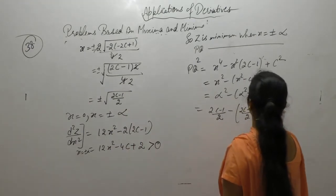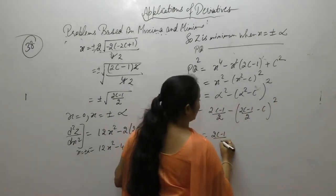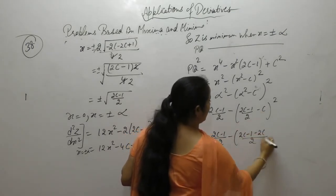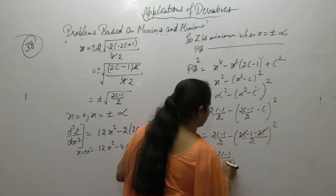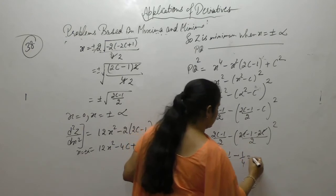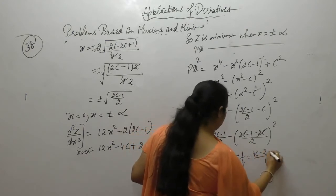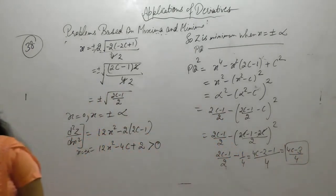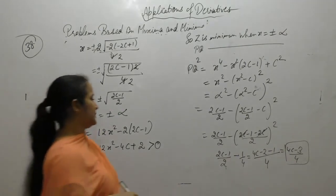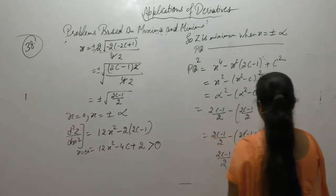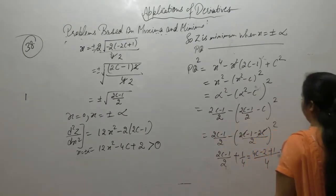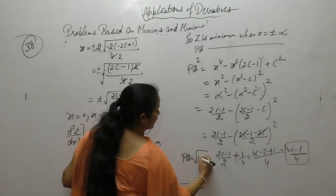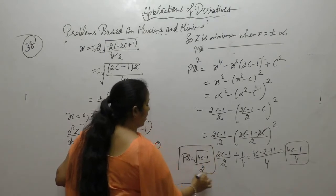Put alpha squared: (2c minus 1)/2 minus c. So (2c minus 1 minus 2c) upon 2 gives minus 1/2. Squared is 1/4. Taking LCM of 4: (4c minus 1) upon 4. This is the value of PQ squared. So PQ equals sqrt(4c minus 1) / 2.